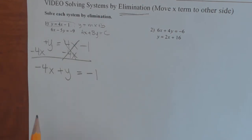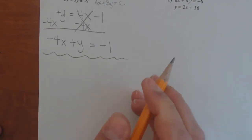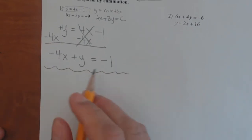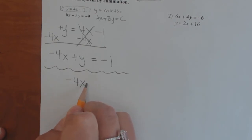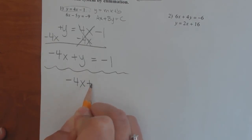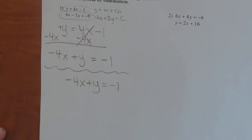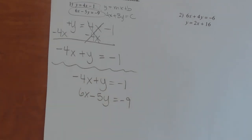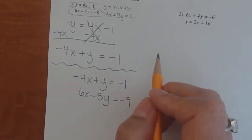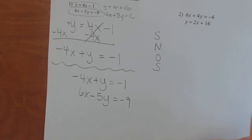That's how you move the x term to the other side. I'm going to make a squiggly line here because I am going to rewrite this so we can do elimination. I'm going to rewrite the top equation — negative 4x plus y equals negative 1 — and rewrite the second equation directly underneath: 6x minus 5y equals negative 9. Now I'm ready to use elimination. What I'm looking for is same number, opposite signs.